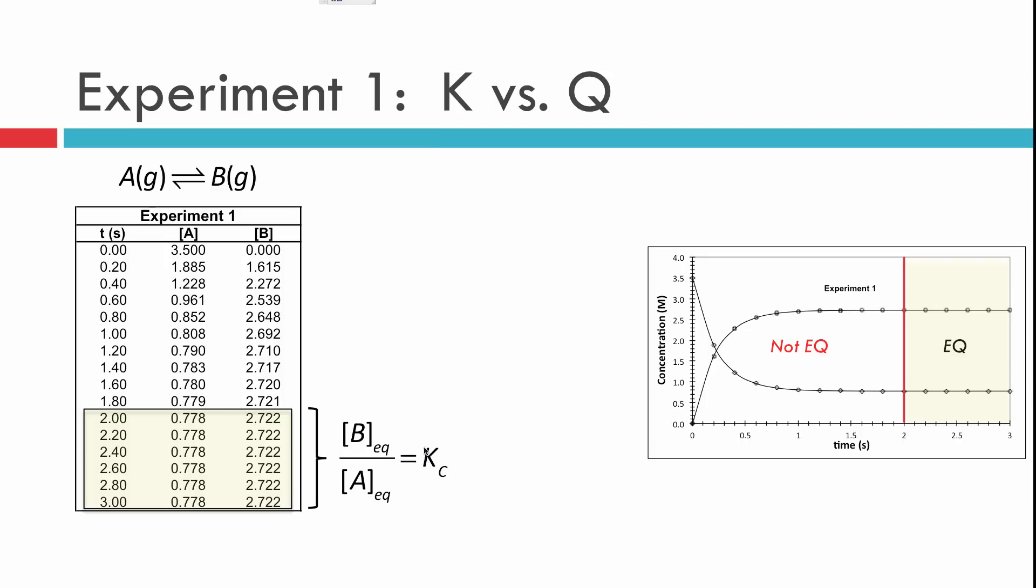And I've added the subscript c here because these substances are gases, and there are other equilibrium constants available to a gas, such as K sub p, and that'll be discussed in a different video or in the book or in lecture. So K sub c means we're doing the equilibrium constant in terms of concentrations. And when we do this calculation, we find that we have an equilibrium constant of 3.5.